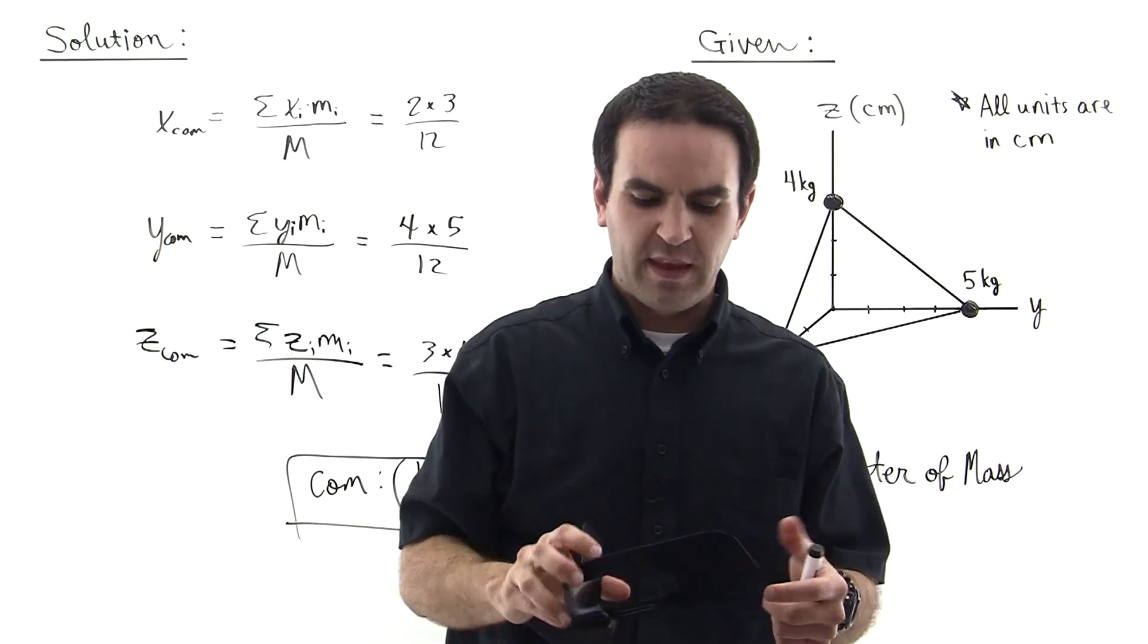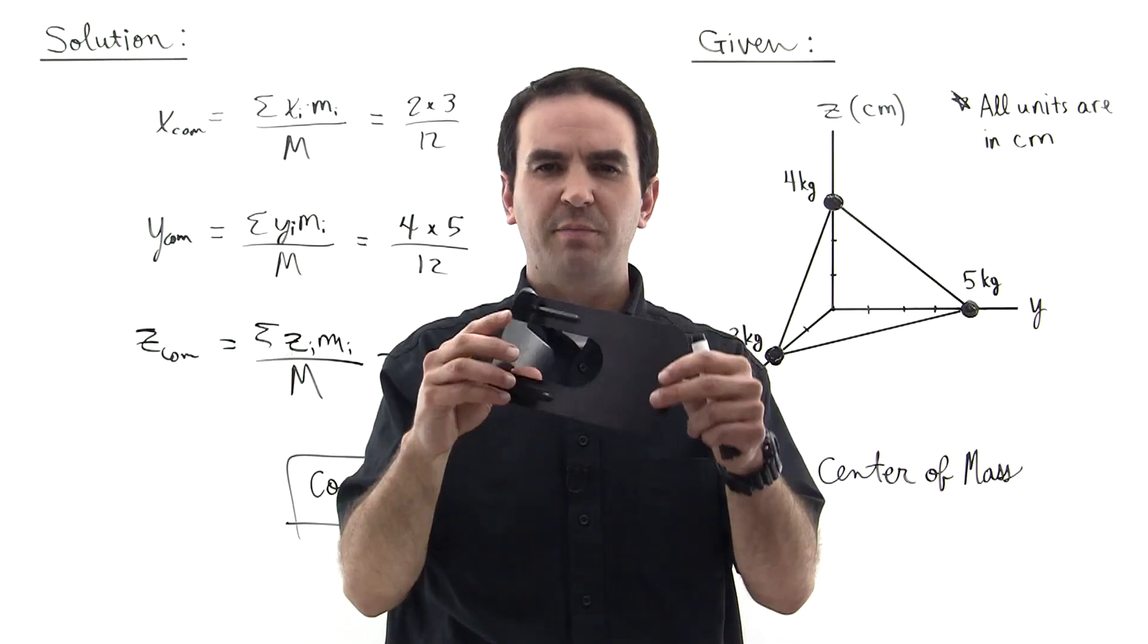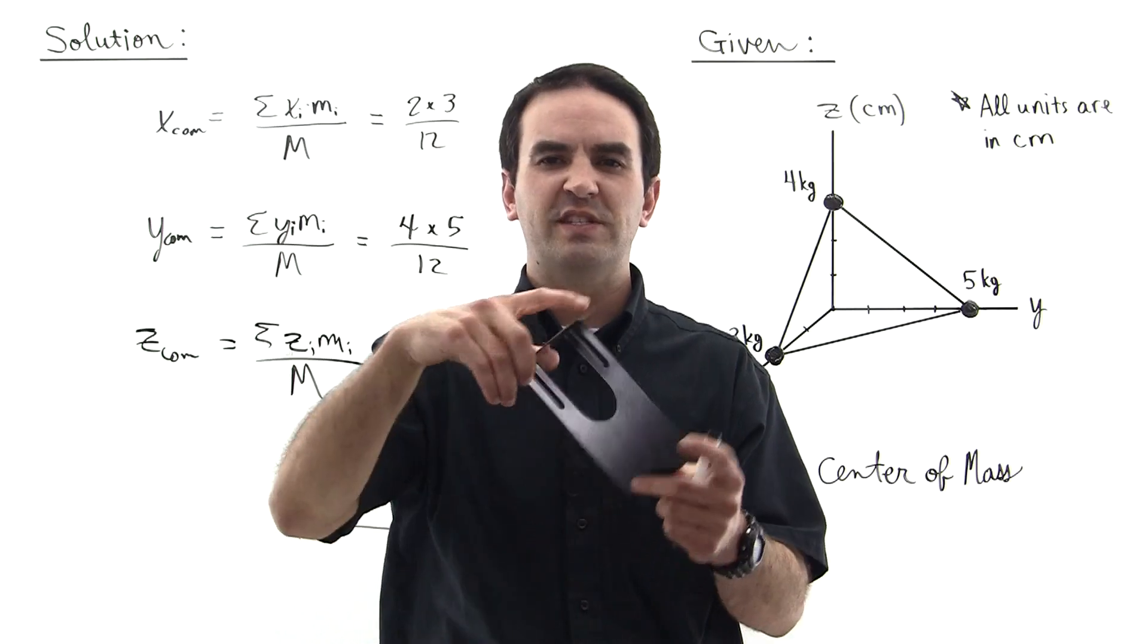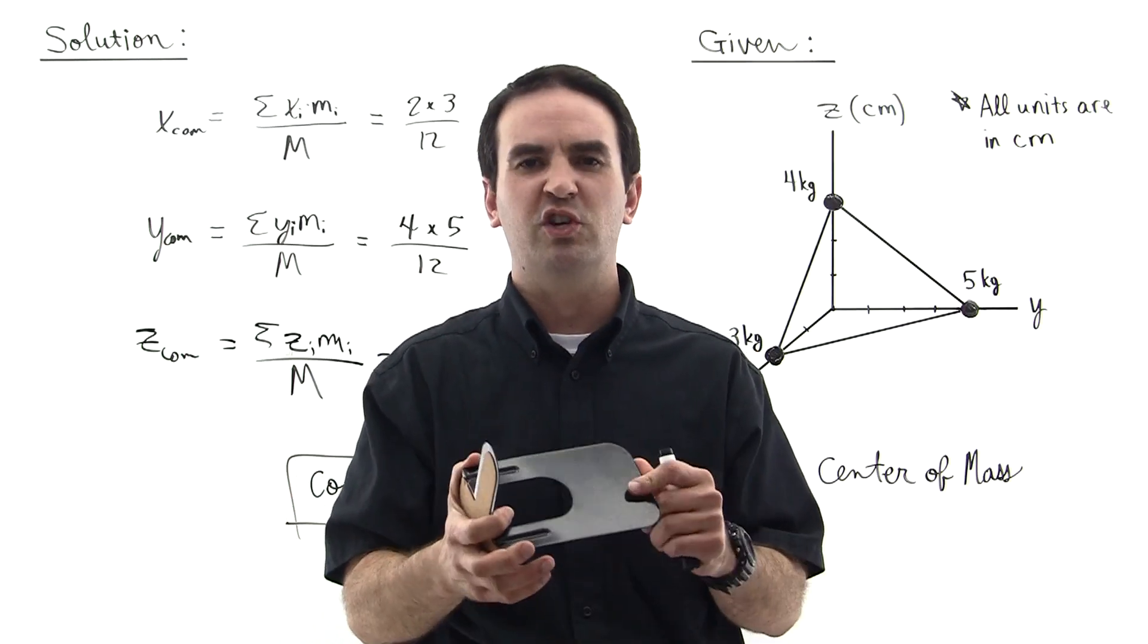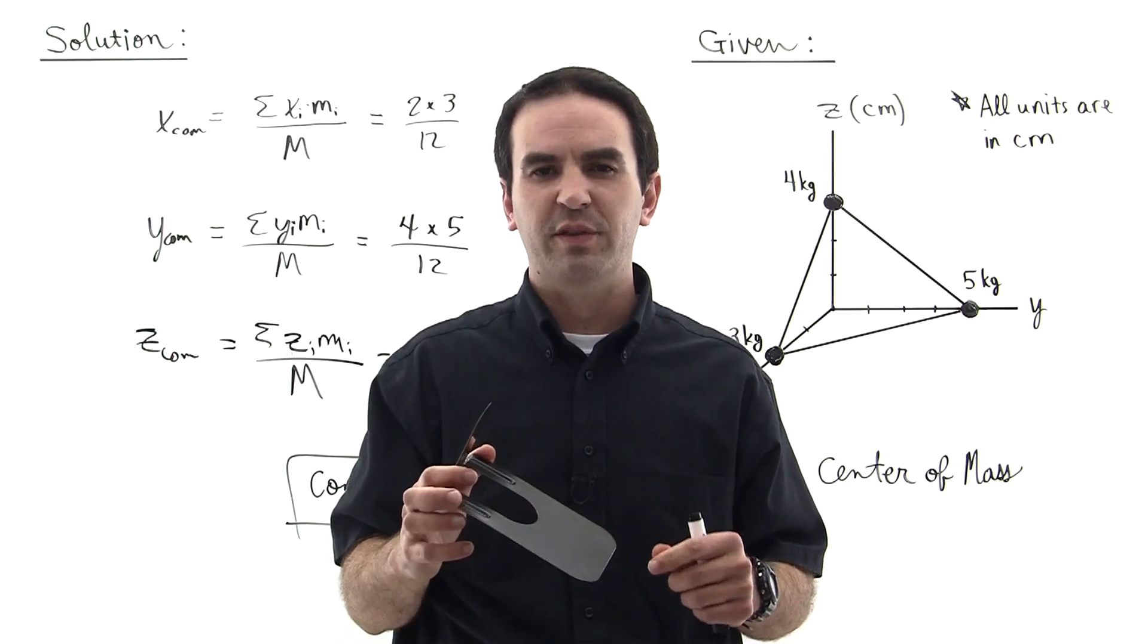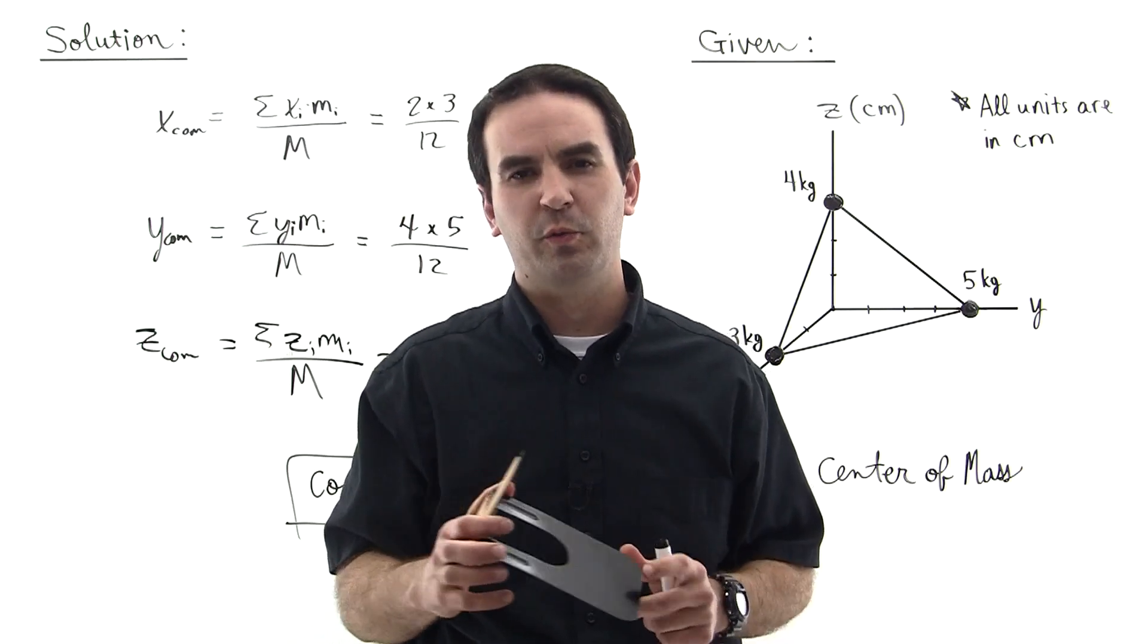Even though this object doesn't behave like a particle, and it may be twisting and tumbling and turning when it's chucked into the air, the center of mass will travel the parabolic path that a particle will travel.